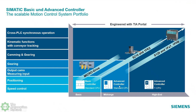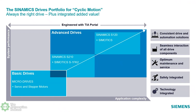We have things laid out with the 1200 as basic controllers, then the standard 1500 as advanced controllers, and then the technology CPU, which is part of our advanced controller portfolio for the high end. One key thing: with all of our controllers, regardless of whether basic or motion controllers, even with all drives, everything is engineered in TIA Portal. You basically have one engineering tool to write your entire motion application — sequence, everything, even drive integration — all in one engineering tool.